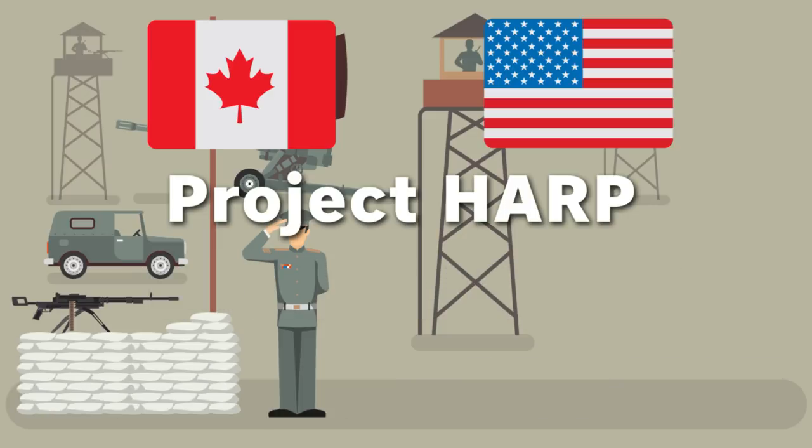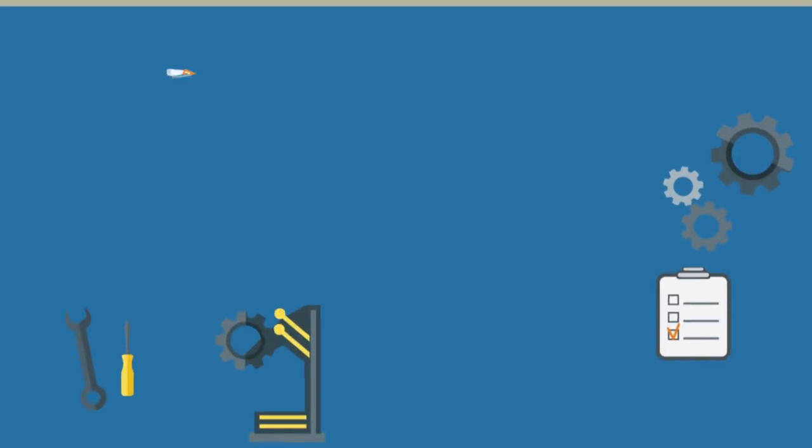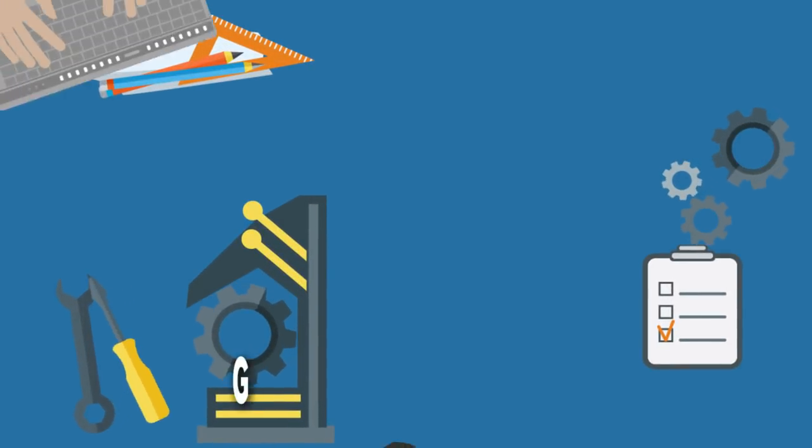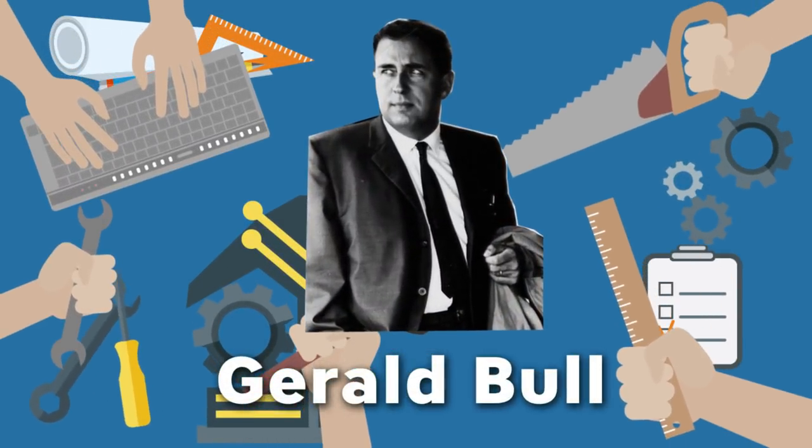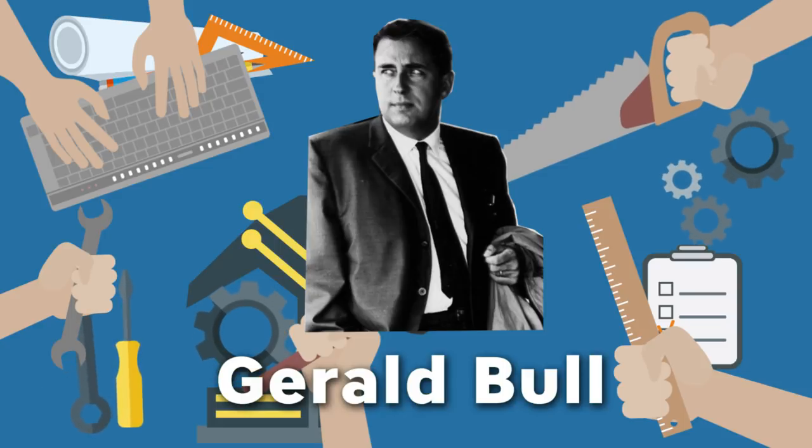HARP was basically the culmination of years worth of work by Gerald Bull, a mad scientist and ballistics engineer who had been pioneering the notion of firing aircraft out of guns.